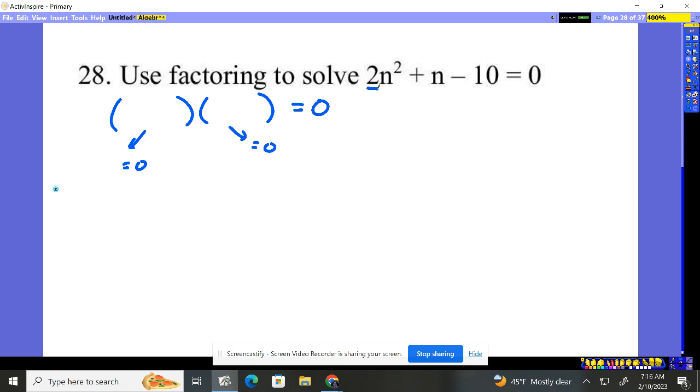Notice that the value in front is a 2. If it's a number, I'm going to have to bust the B. Remember to bust B, we do the A value times the C. 2 times 10 is 20, and this is going to be negative 20.